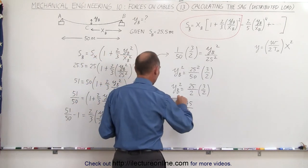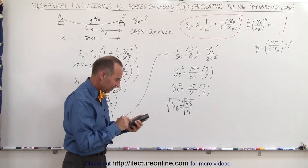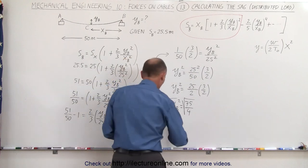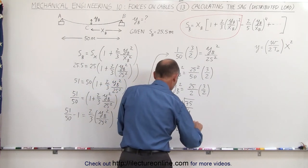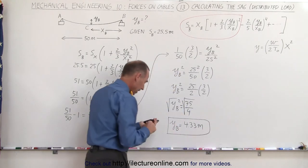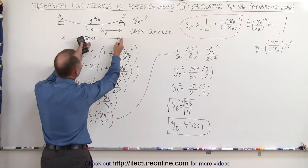So if we take the square root of the left side and the square root of the right side, let's see, we get 75 divided by four, take the square root and we get Y sub B is equal to 4.33 and of course the units were meters.